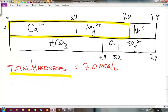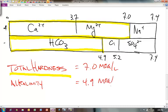Alkalinity would be next. Alkalinity is going to be the amount of bicarbonate that we have in solution. So it looks like we have 4.9 milliequivalents per liter.